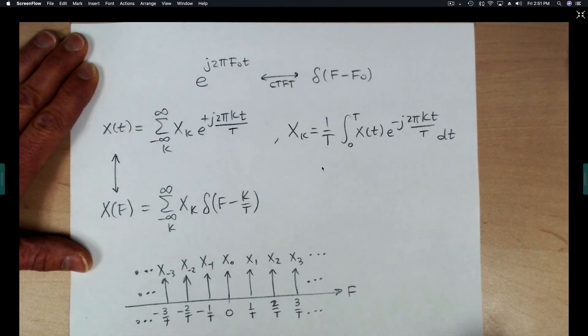So the Fourier transform of a periodic signal is a train of impulses, each one weighted by a different value.